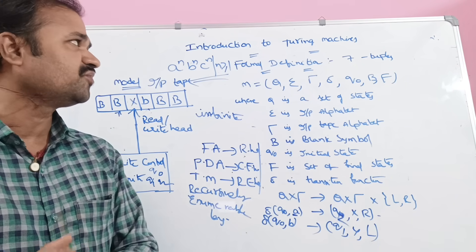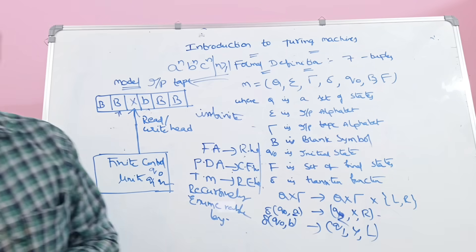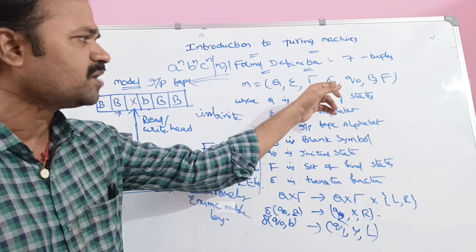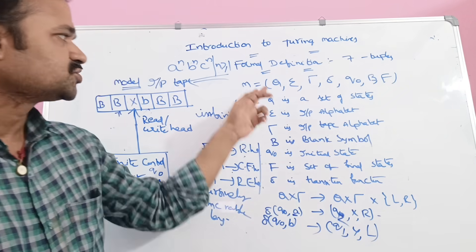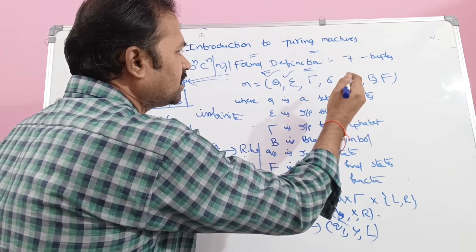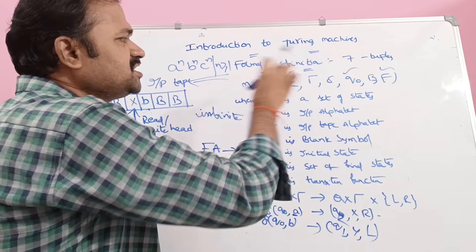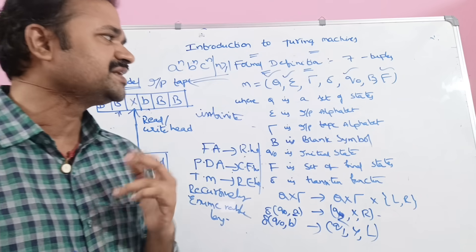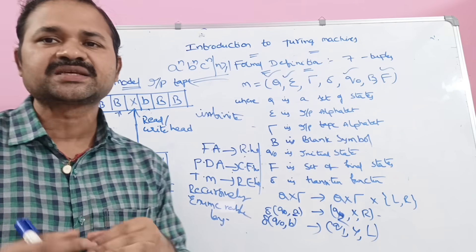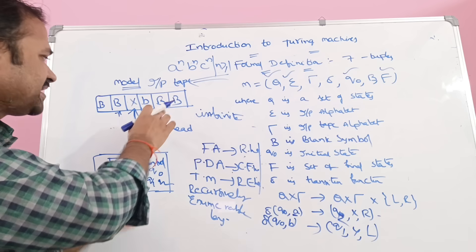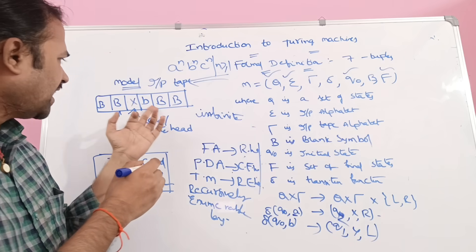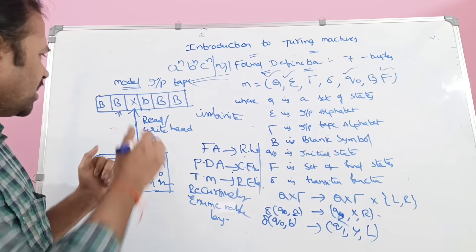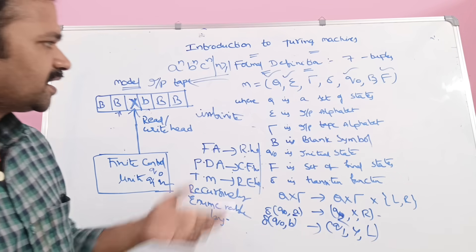Now let us see the formal definition of the Turing machine. A Turing machine is defined with the help of seven tuples: M = (Q, Σ, τ, δ, Q₀, B, F). Here Q, Σ, Q₀ and F are similar to what we saw in finite automata and pushdown automata. Q means a set of states, and Σ means the input alphabet.